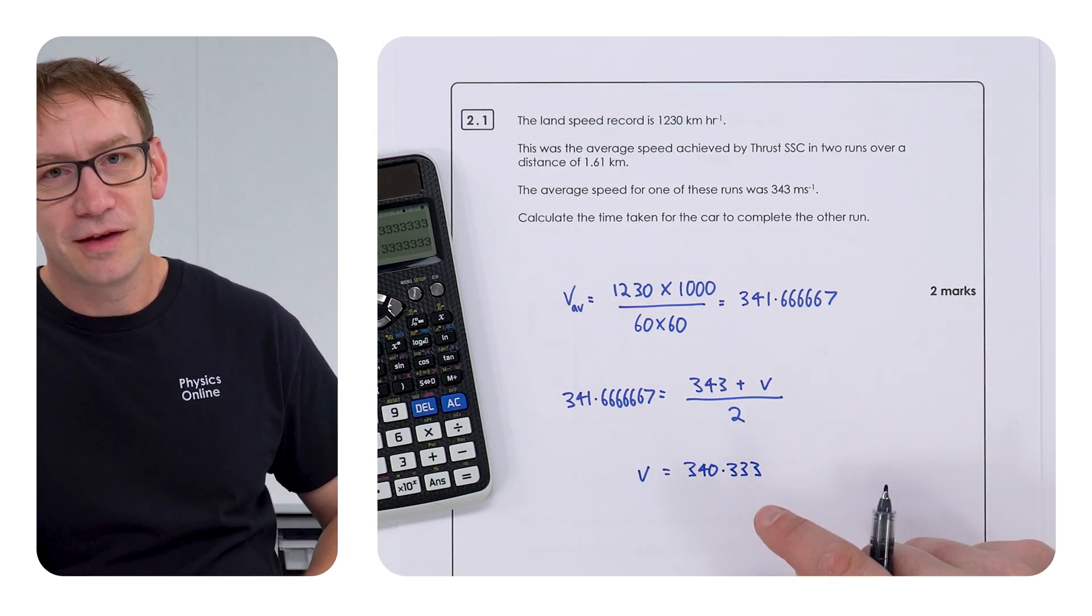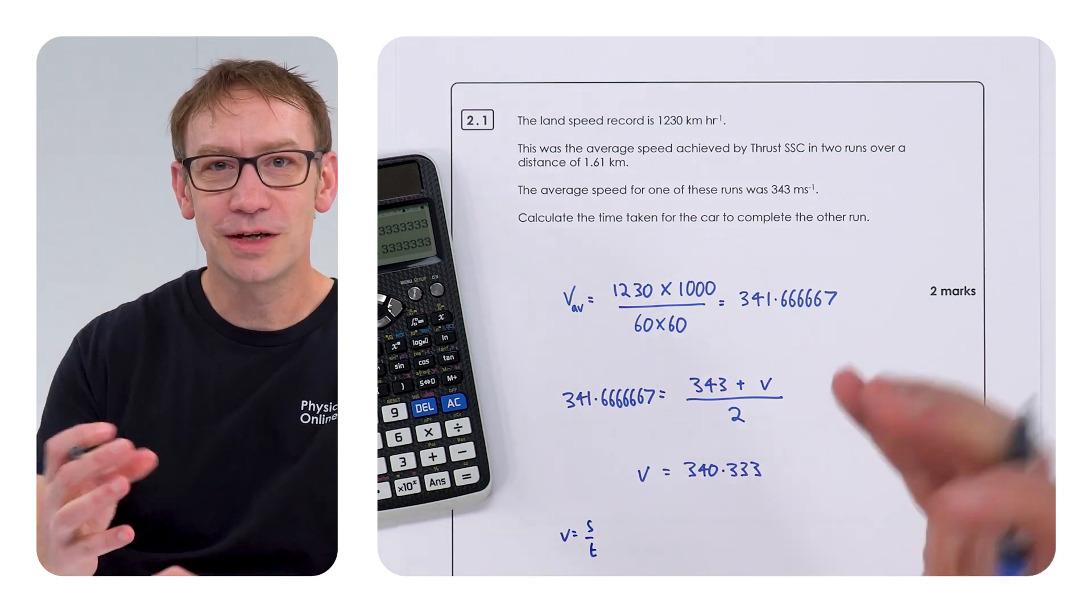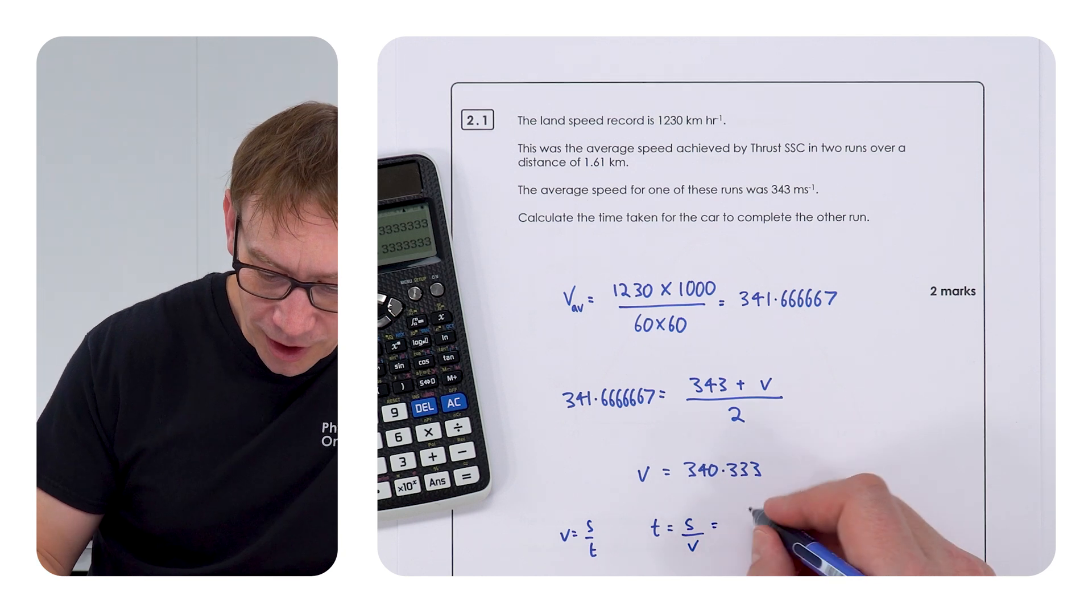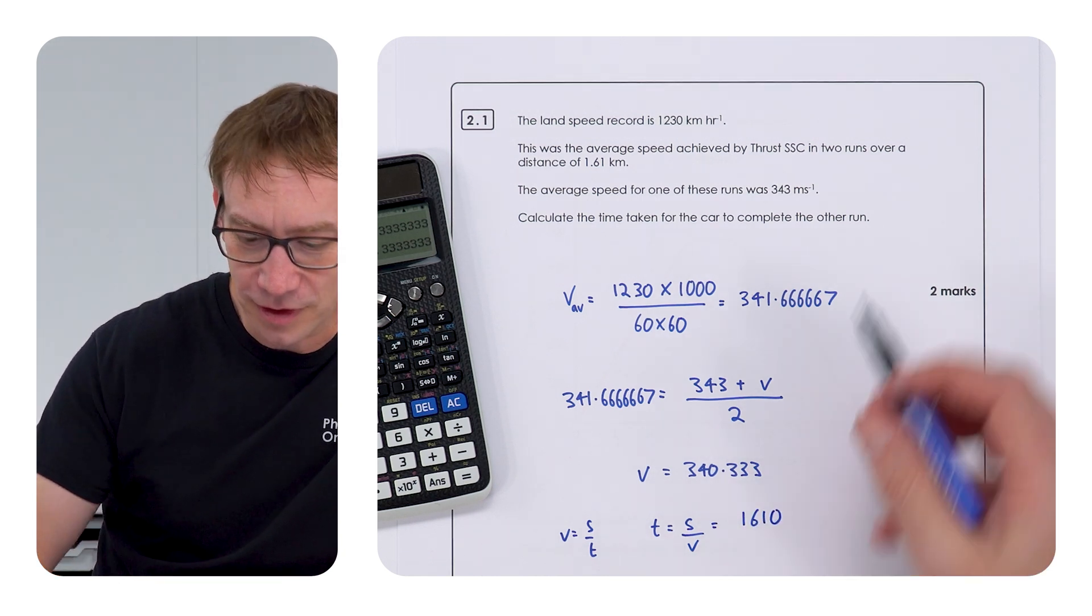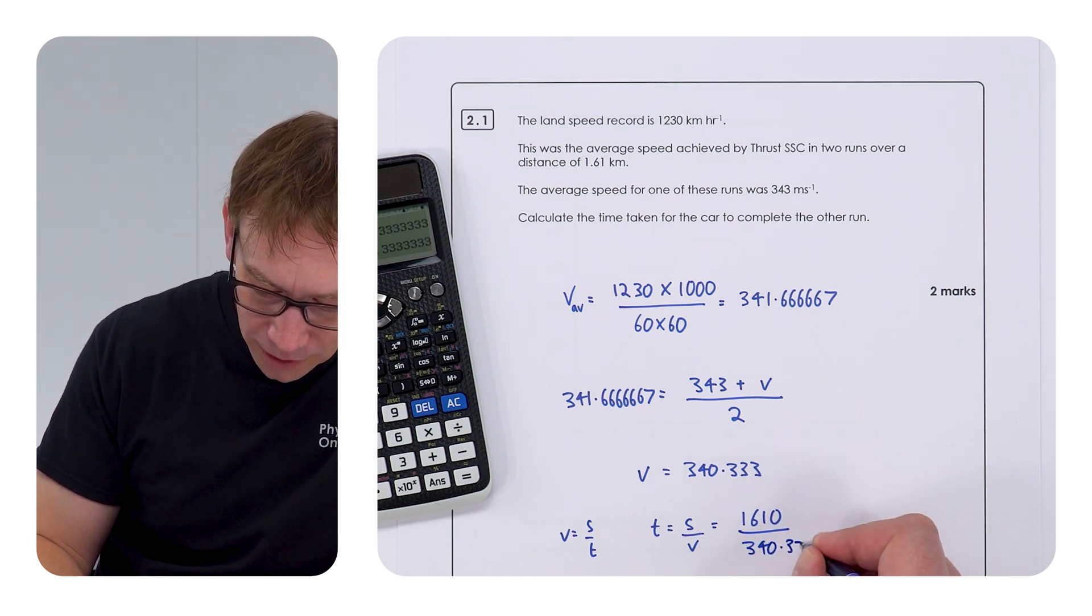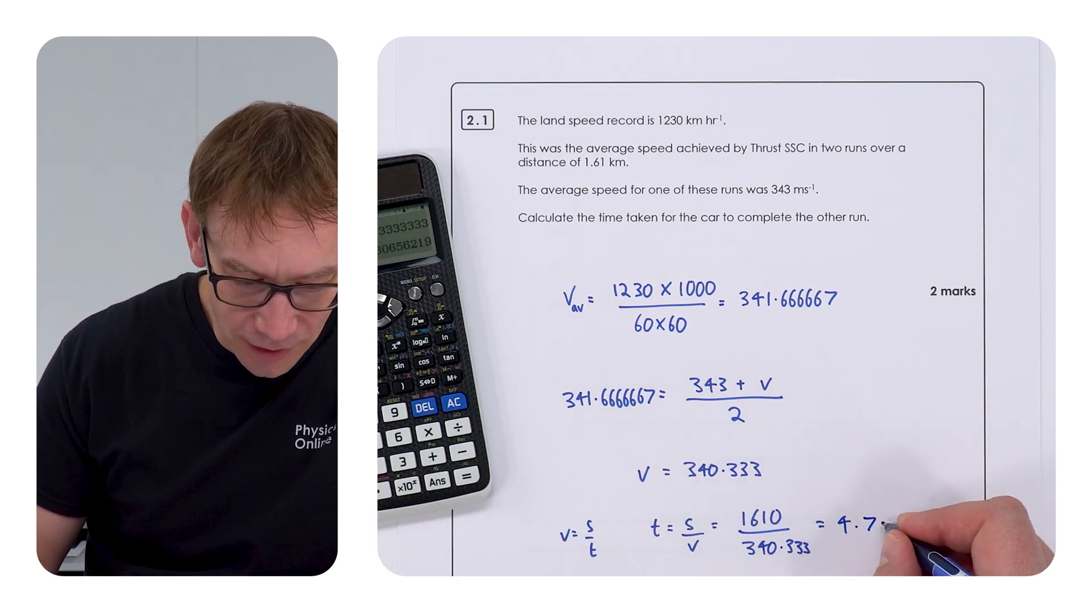So that is the speed or the velocity of the other run, but we want to look at the time taken. Now, of course, here we're going to use the probably most simple equation. It's not even given to you at GCSE because all of you know it from year seven onwards. Speed is equal to distance over time. And I'm just going to write this down here because it takes no time to write down the equations. We can say that the time is going to be equal to the distance travelled over the speed, which is equal to 1610 divided by 340.333, which equals 4.73.